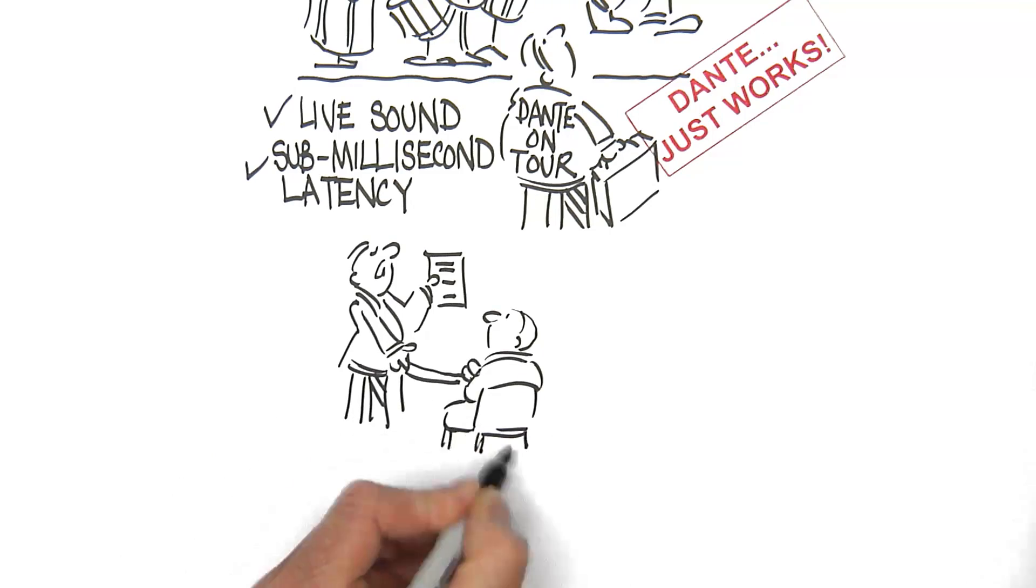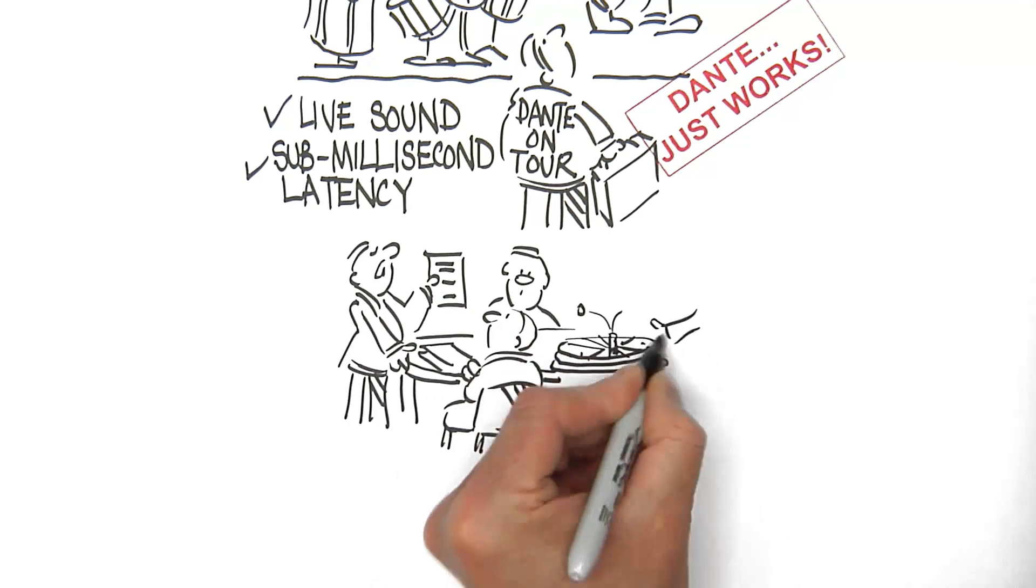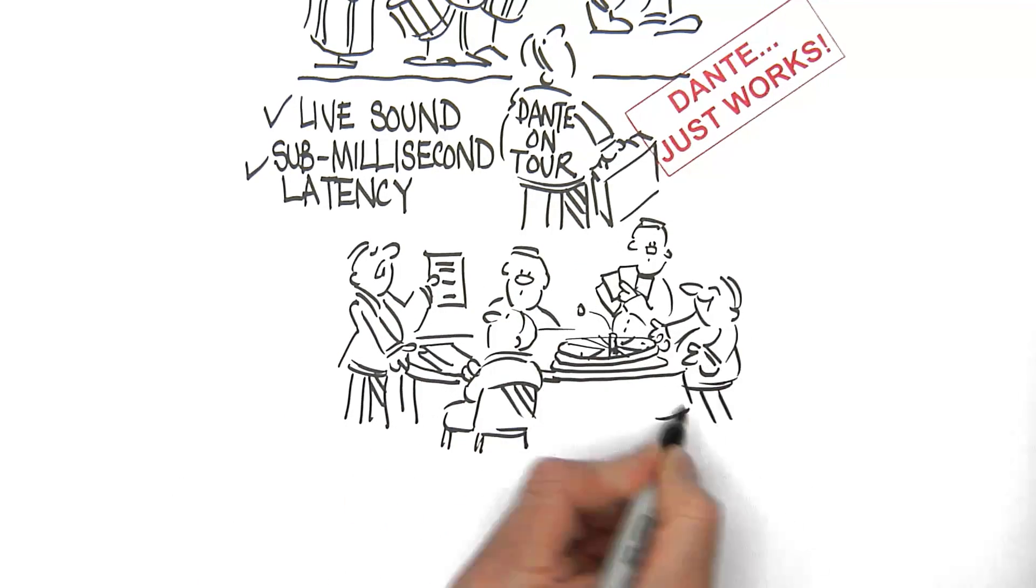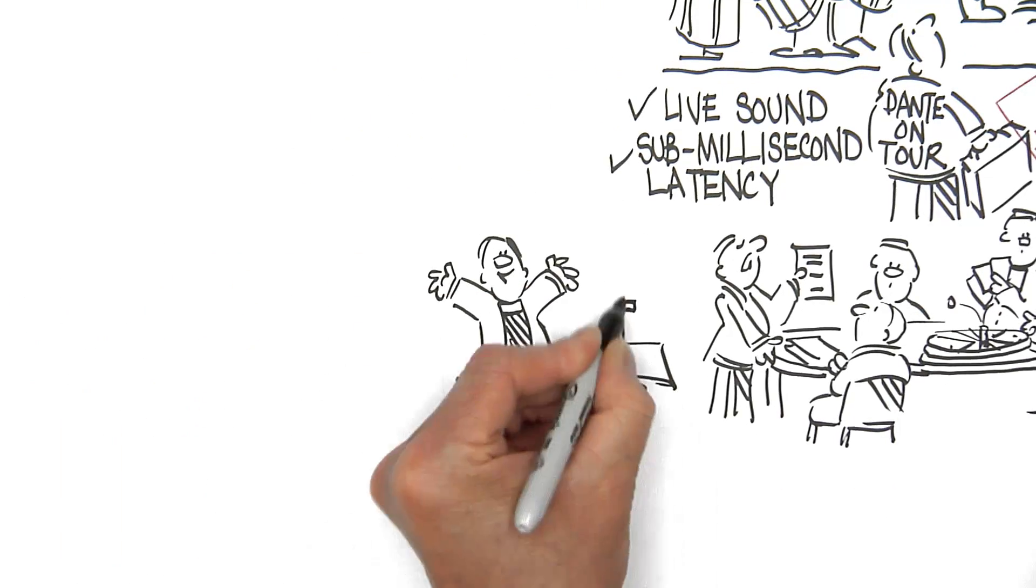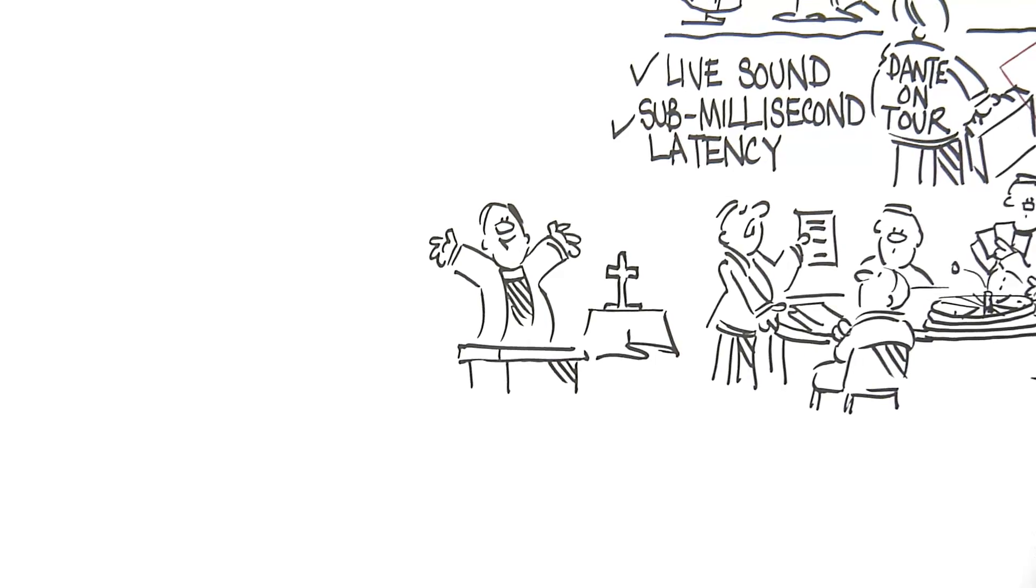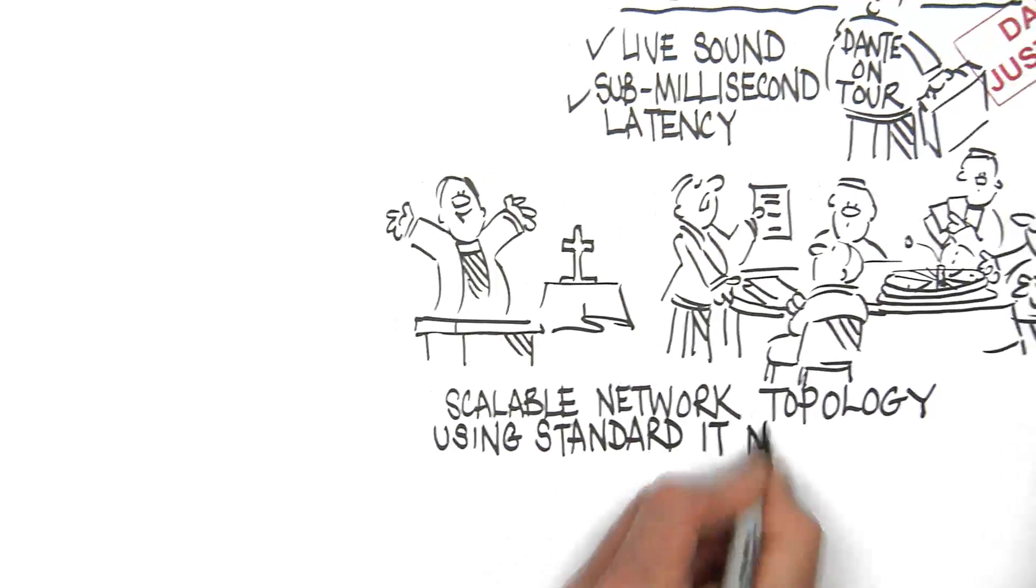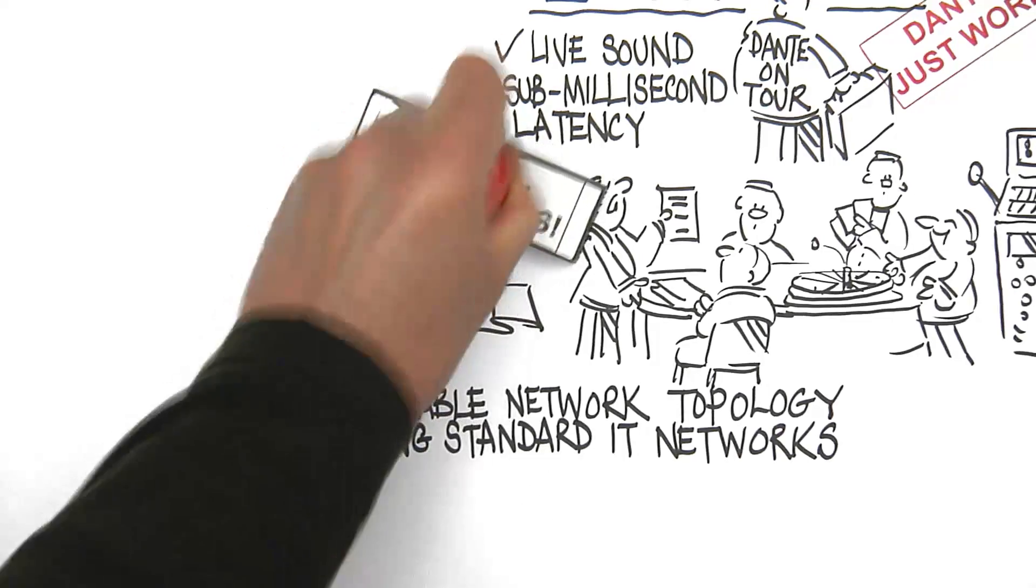Installed systems like boardrooms, hotels, casinos, shopping centres, performing arts centres, and houses of worship require a scalable network topology using standard IT networks. Dante just works.